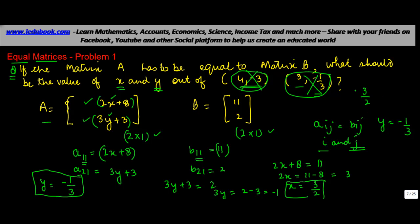And if you try this out, you will get that answer. So if x is equal to 3 by 2, this element will be equal to 2x plus 8, which is 2 into 3 upon 2 plus 8. This gives knockoff, 3 plus 8 gives you 11, which is the corresponding value here.